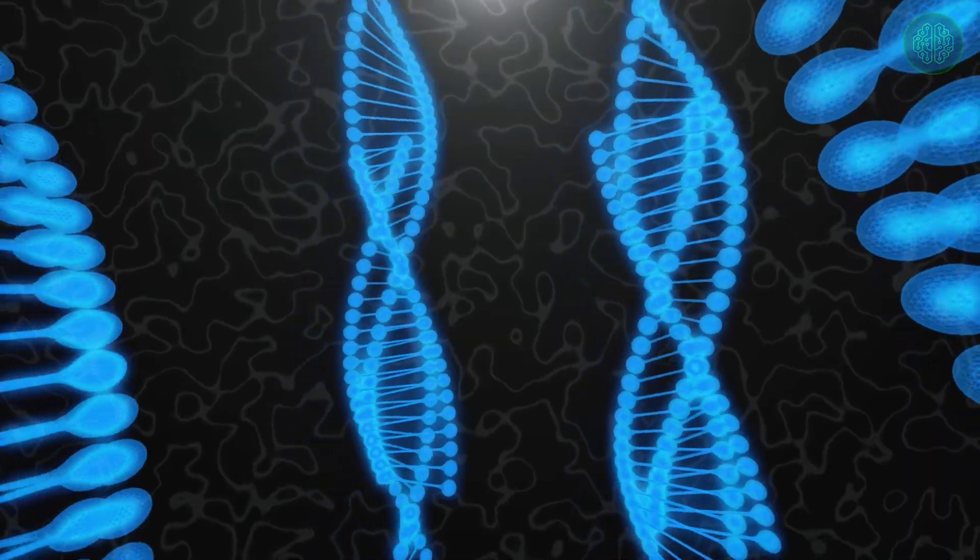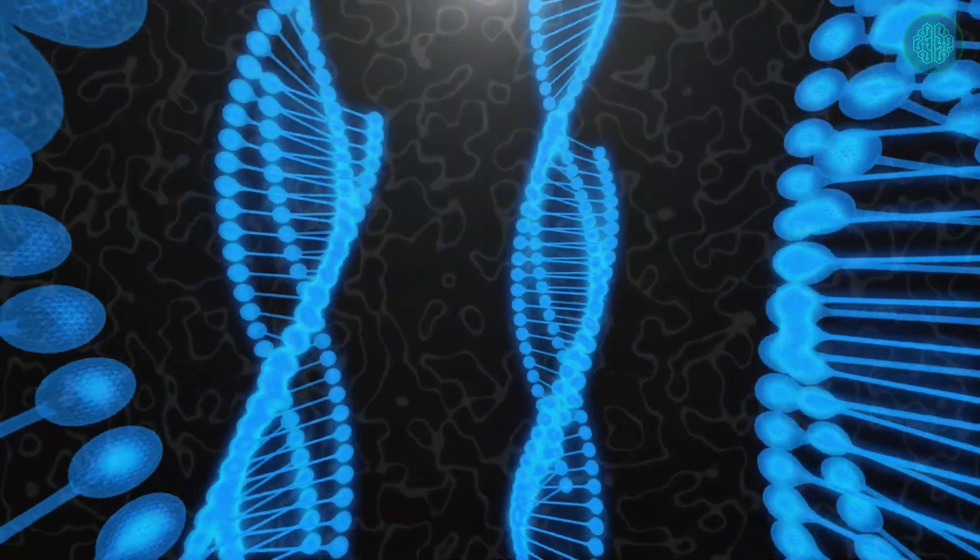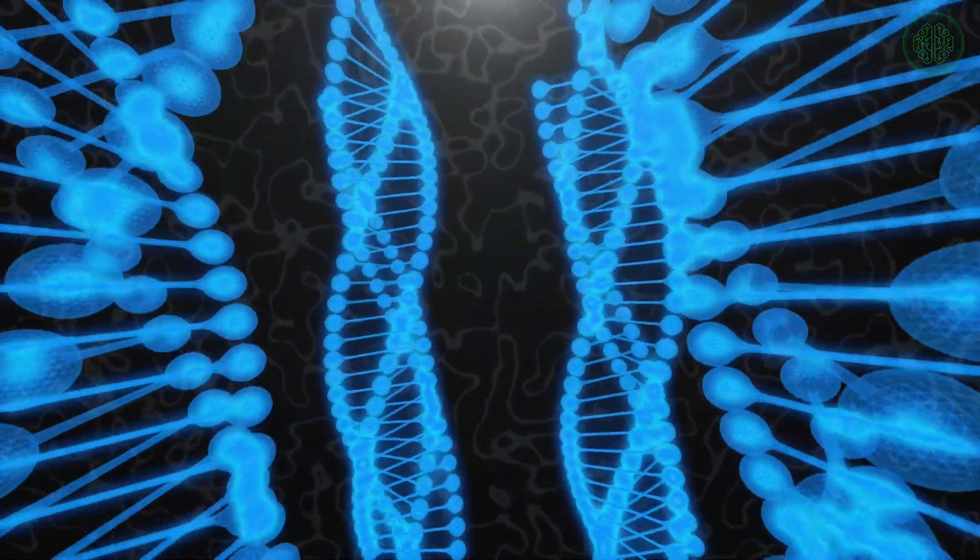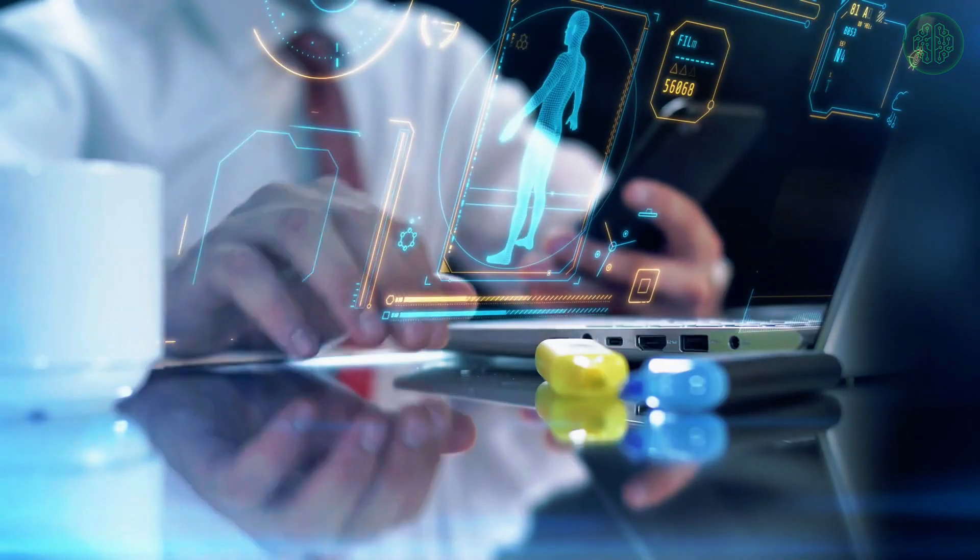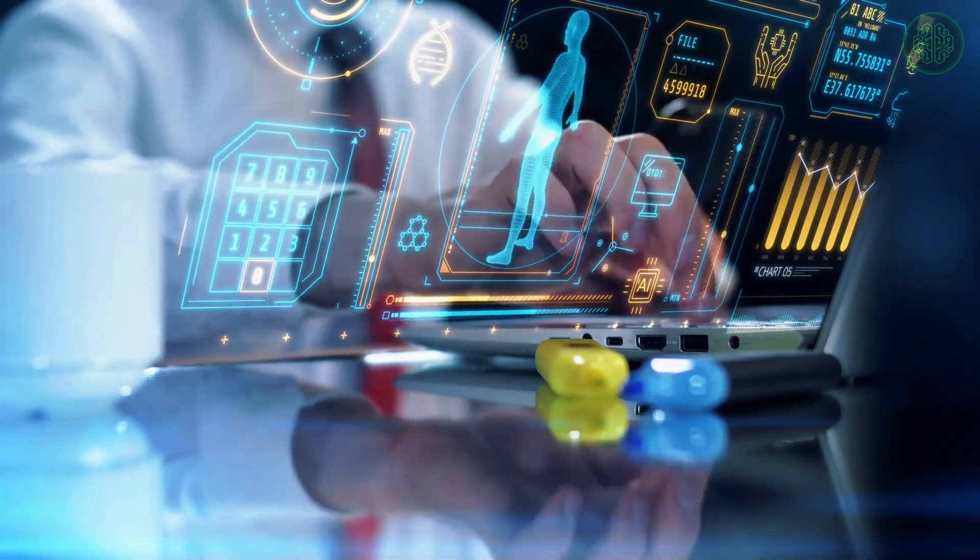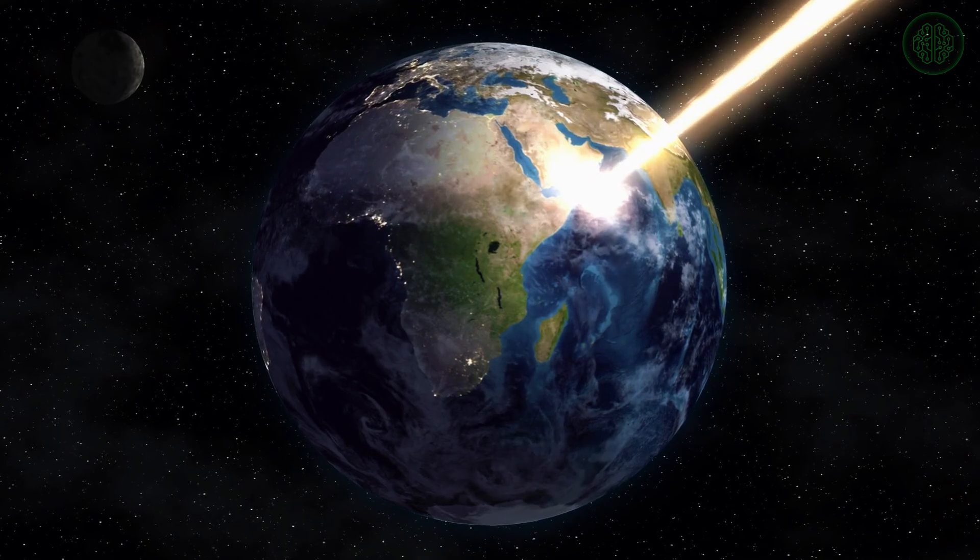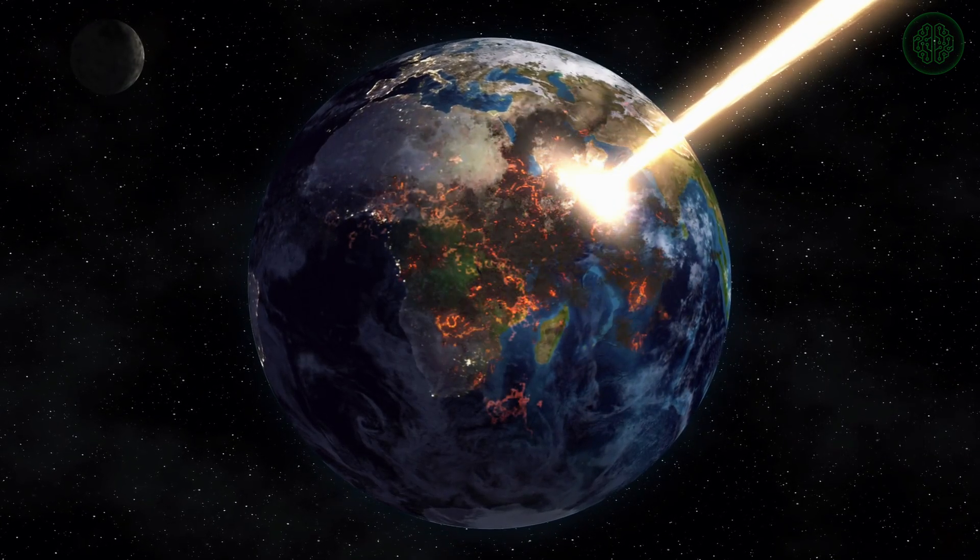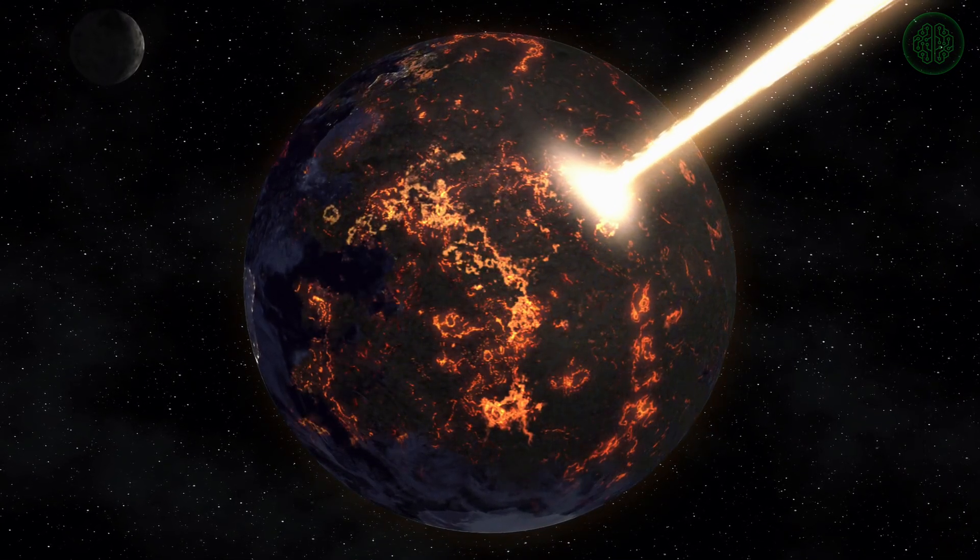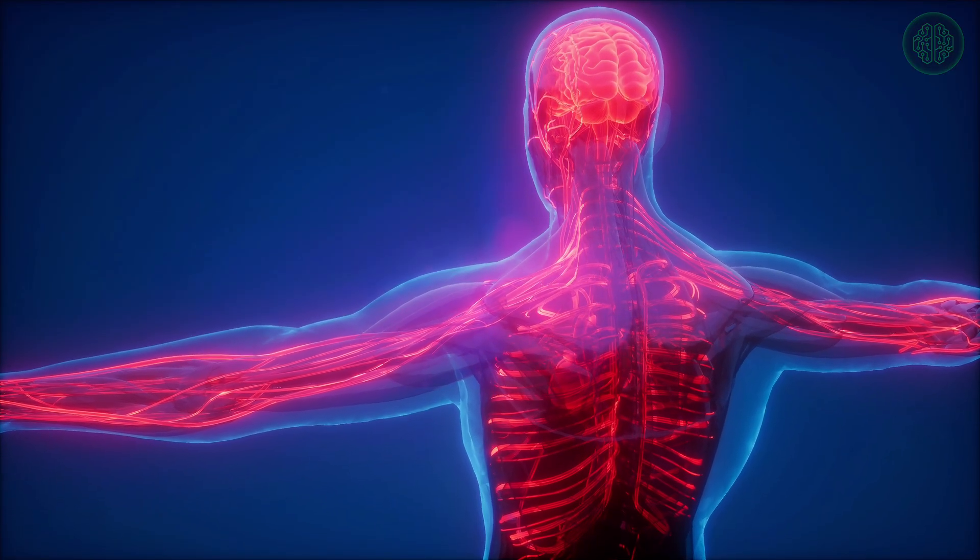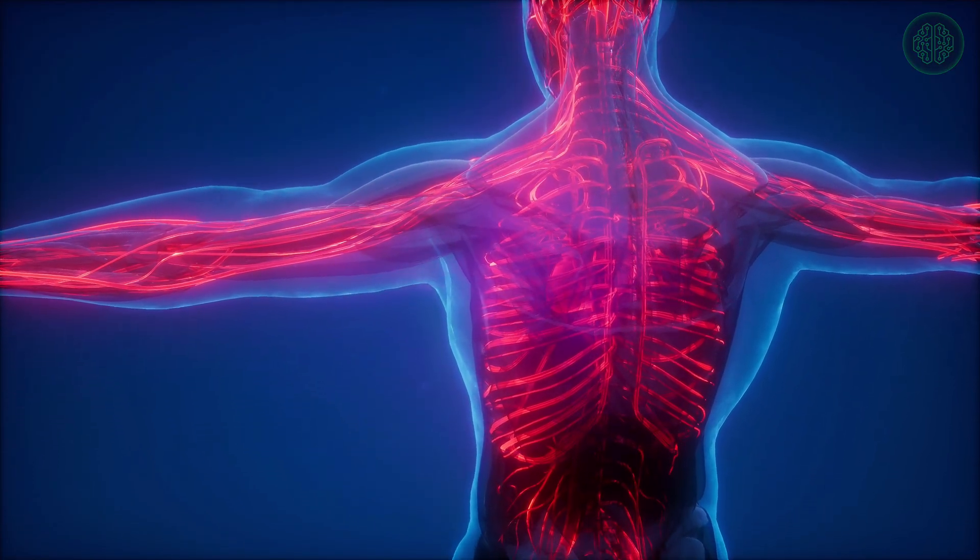Or the filter could be the development of complex life itself, the transition from single-celled organisms to multicellular life forms. It could even be the development of intelligence and technology, suggesting that civilizations might inevitably destroy themselves through war, environmental destruction, or other self-inflicted catastrophes. The Great Filter Theory raises a chilling question. If the filter is real, have we already passed it or is it still ahead of us?